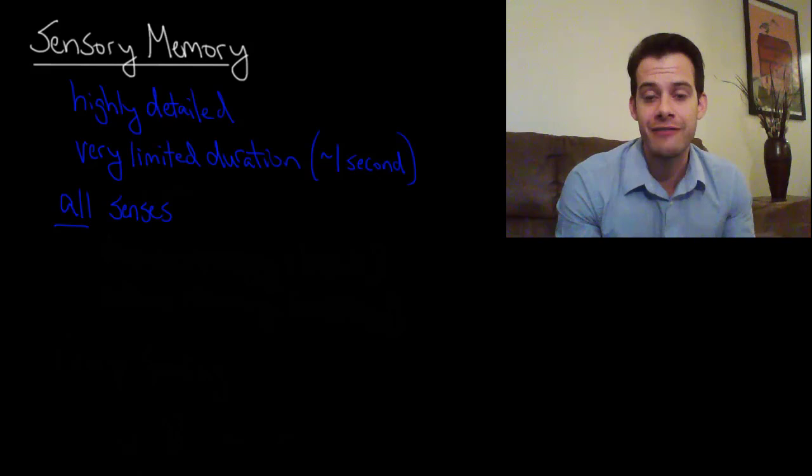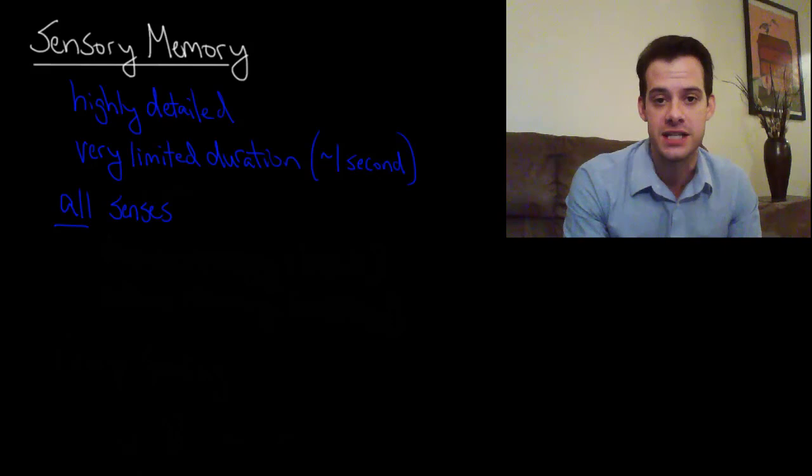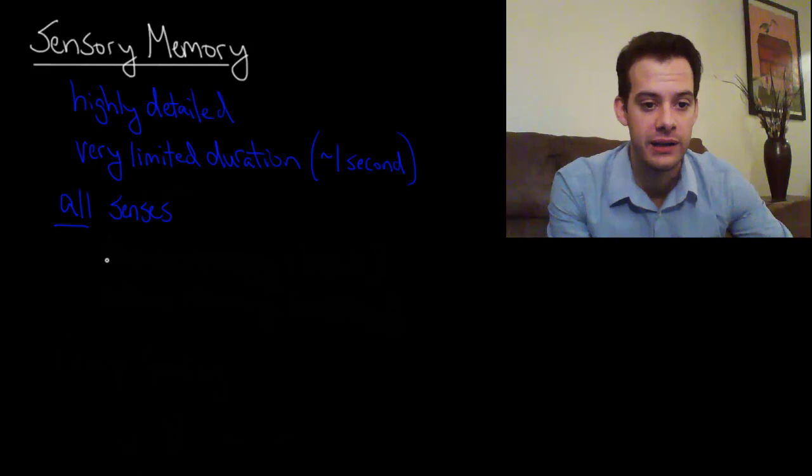Now as I said, this refers to information from all of our senses so we can be more specific with sensory memory and we can talk about specific types of sensory memory. So for instance you could refer only to your visual sensory memory and that's known as iconic memory.